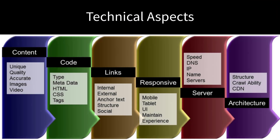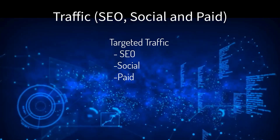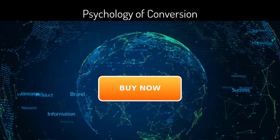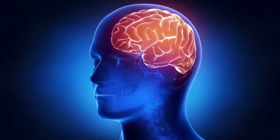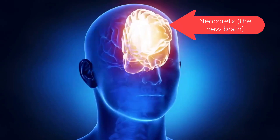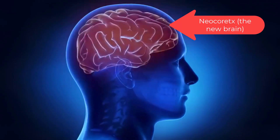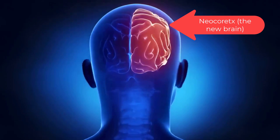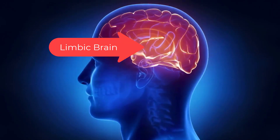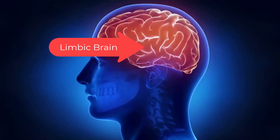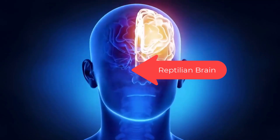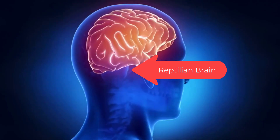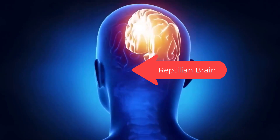All online marketing must have three elements in alignment: the technical aspects — servers, layout, code structure; the traffic — SEO, social, and paid; and the psychology of conversions. Your brain has three basic layers and only one real decision maker. The neocortex thinks and processes rational data. The limbic brain feels emotions and governs our instinct for fight or flight response.